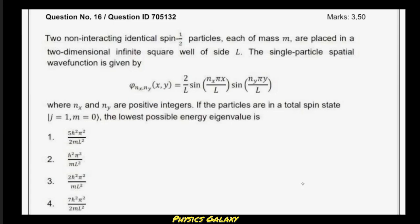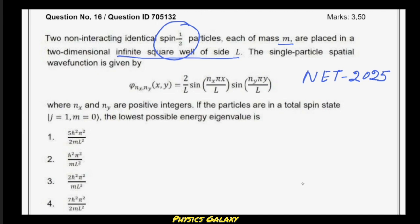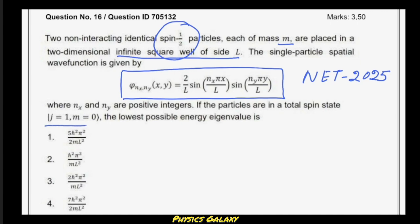Hello and welcome back. A question came from quantum mechanics in the NET-JRF examination, and this is a very interesting problem. Two non-interacting identical spin one-half particles, each of mass M, are placed in a two-dimensional infinite square well of side L. The single particle spatial wave function is given, where NX and NY are positive integers. If the particles are in a total spin state given by this, the lowest possible energy eigenvalue is what we need to find.